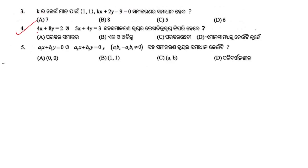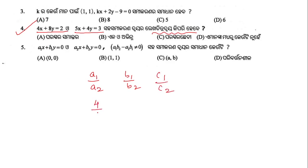Question number 4: For the equations 4x + 8y = 2 and 5x + 4y = 3, we analyze the graphical representation. We check the relations between a1/a2, b1/b2, and c1/c2. If a1/a2 is not equal to b1/b2, the lines are intersecting — they are not parallel or coincident. Option C is the right answer.